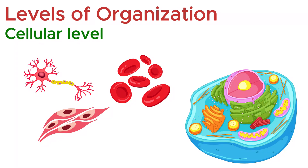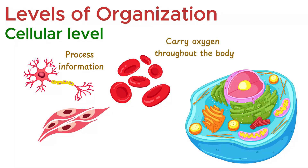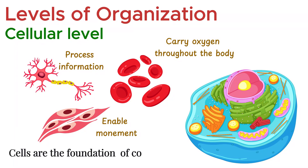For example, brain cells process information, red blood cells carry oxygen throughout the body, and muscle cells enable movement. Cells are the foundation of complex life. By understanding them, we gain insight into the remarkable organization and function of the human body.